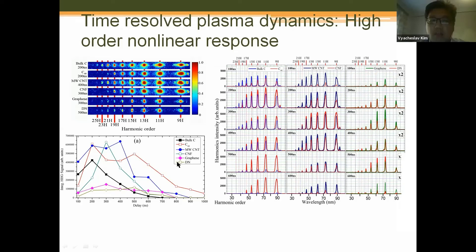This panel presents measurements of integrated harmonic signal for different delays between heating pulse and probing pulse. For bulk carbon we see a classical picture with a pronounced maximum in harmonic yield at 200 nanoseconds and then a gradual decrease. For other materials, the position of the maximum shifts to different delays in the range of 200 to 500–600 nanoseconds, which is explained by high harmonic generation occurring from different size emitters having different spreading speeds inside the plasma plume.